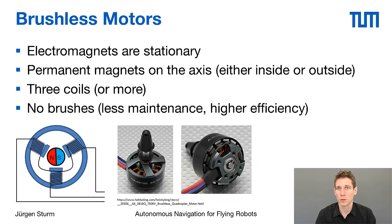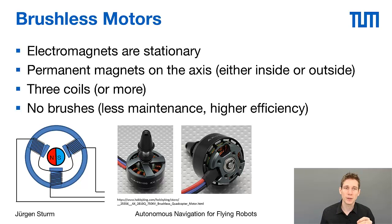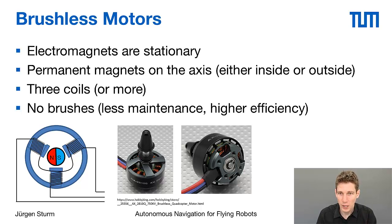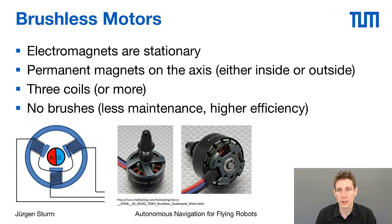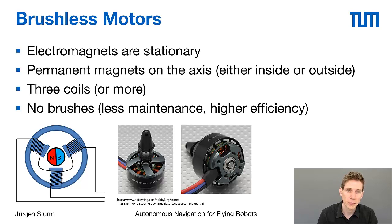An alternative to DC motors are the so-called brushless motors. There you have the electromagnets on the outside and they are stationary, while the permanent magnets are on the axis. This axis can either be in between the coils or outside around the coils. You need at least three coils for building a brushless motor, but most brushless motors used in practice have much more, as you can see in the images. The advantage of a brushless motor is that you don't have brushes or a split ring to reverse the current, so the motors need less maintenance and there is less mechanics.